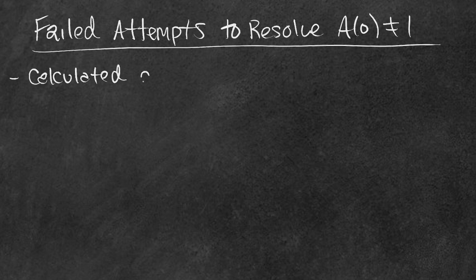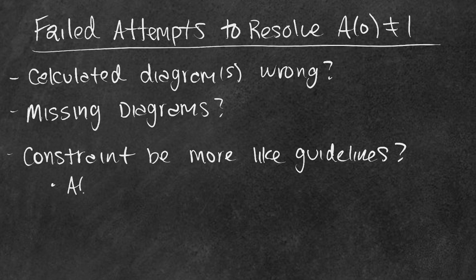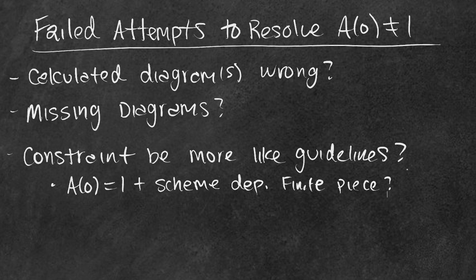Naturally over the years I've tried exploring a bunch of options of where the problem child could be in this calculation. Am I calculating a specific Feynman diagram wrong? Are there ones I'm missing? Should I be taking the constraint very literally? Is it renormalization scheme dependent? Can A of 0 equal 1-ish? No — that one is actually to be taken very literally. I think the issue might just lie in combinatorics, as embarrassing as that is to admit, and that's what I'm going to be exploring in this video.